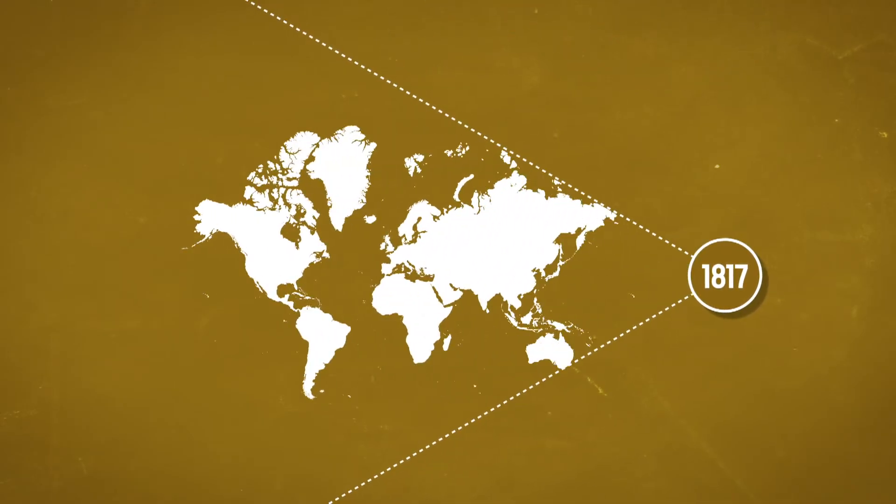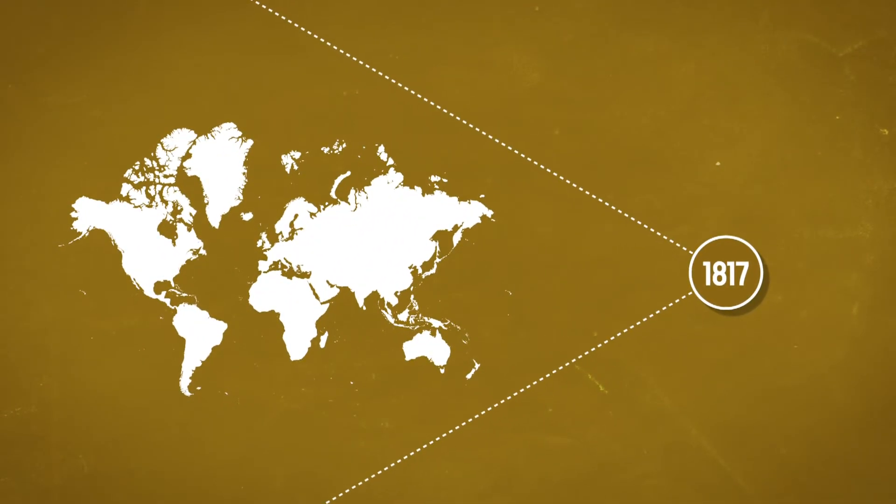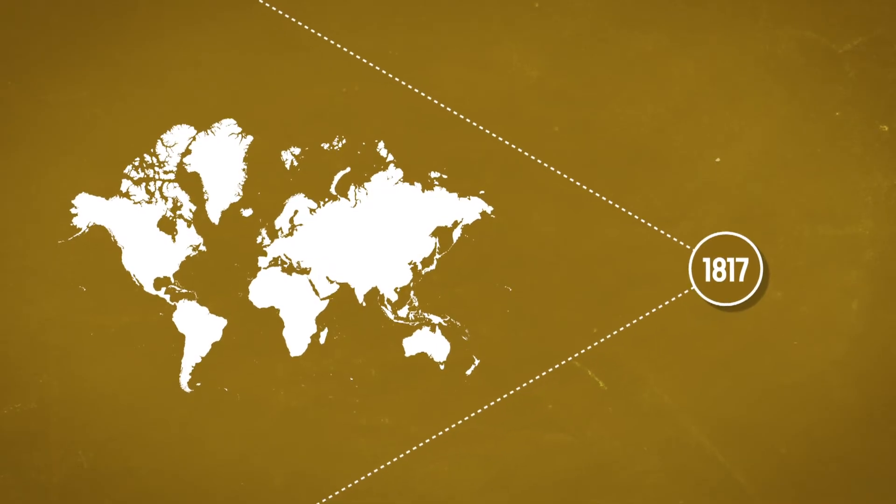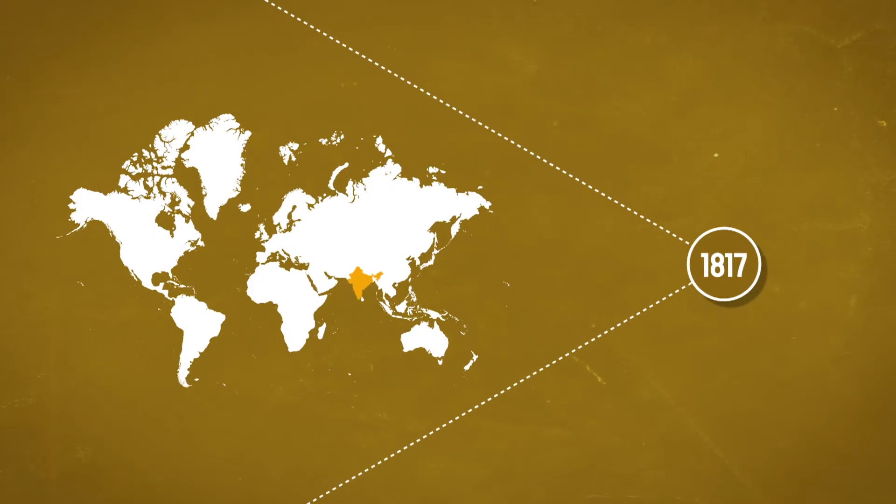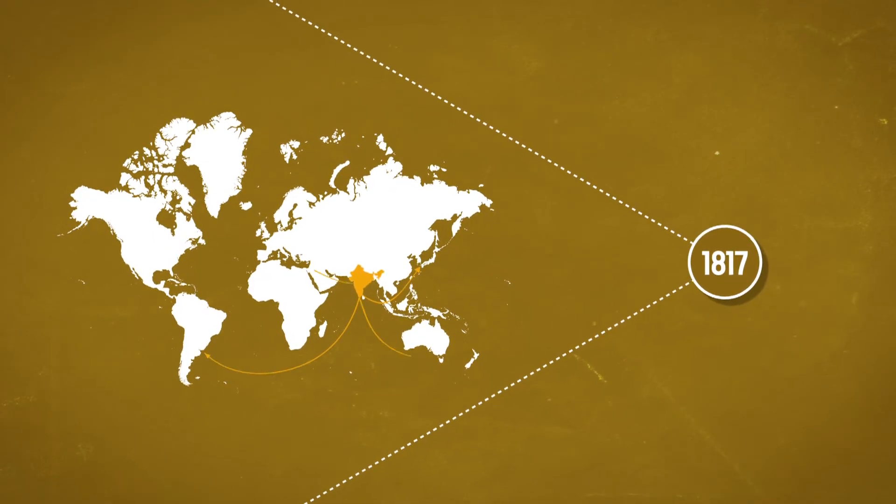In 1817, the first cholera pandemic marked the beginning of a new era. From India where it originated, the disease followed trade routes to reach all four corners of the globe.